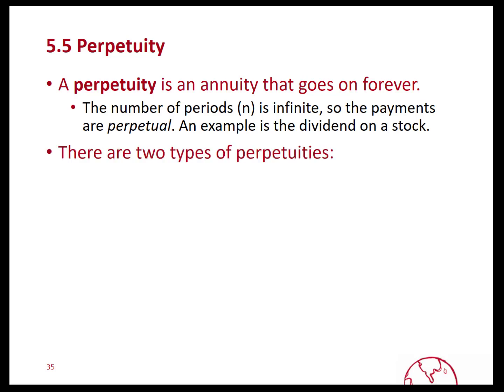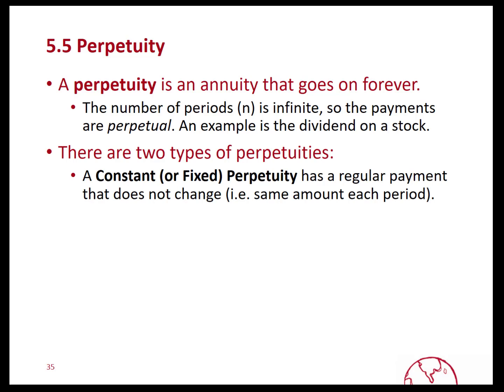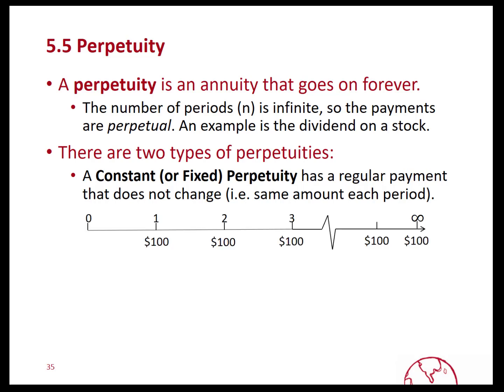There are two types of perpetuities we're going to look at. The first one is called a constant or a fixed perpetuity. What this means is that the regular payment does not change ever over the perpetual life of this instrument — it's going to be the same amount each period.